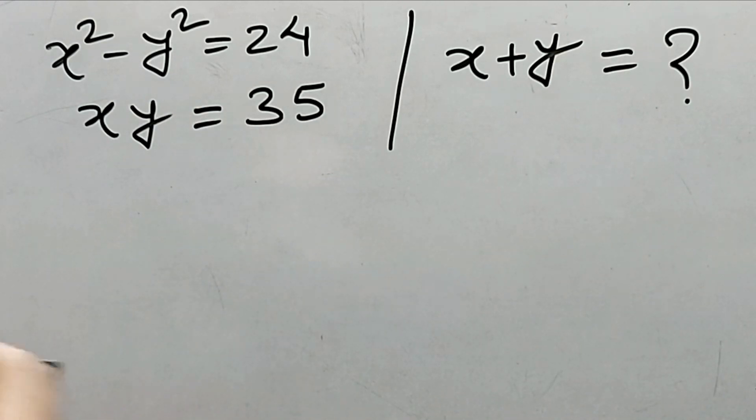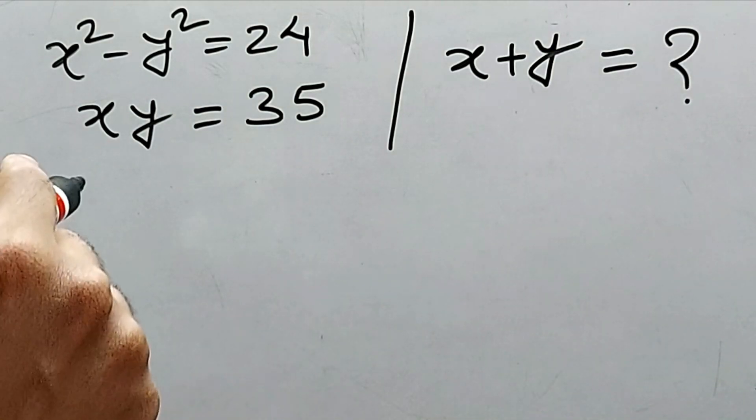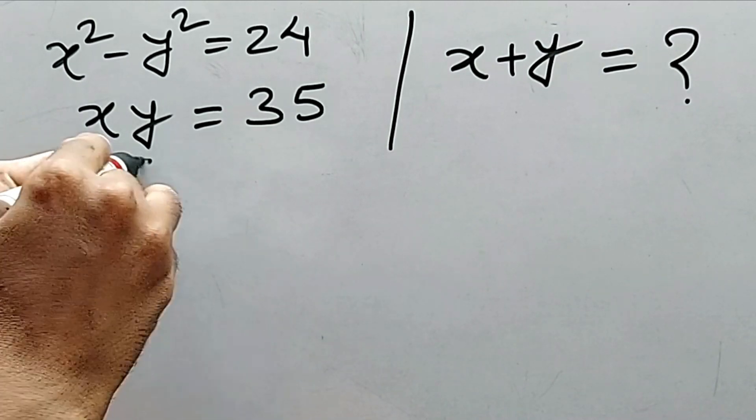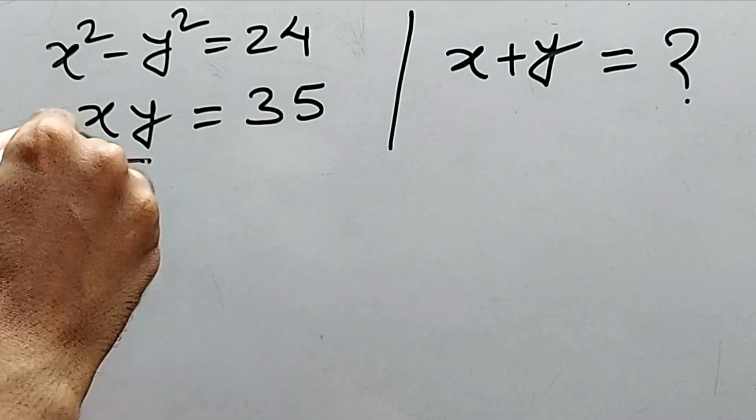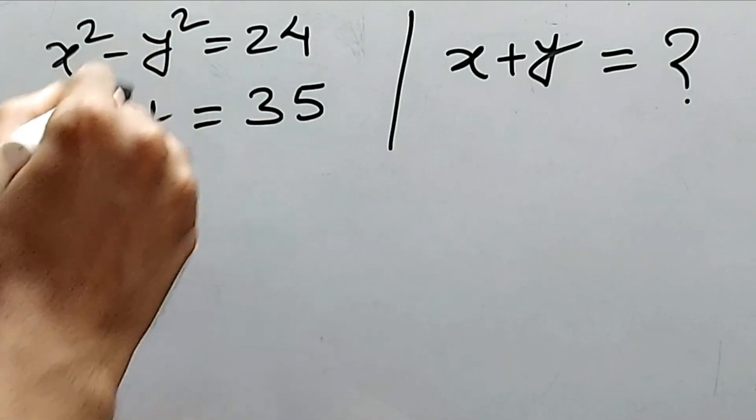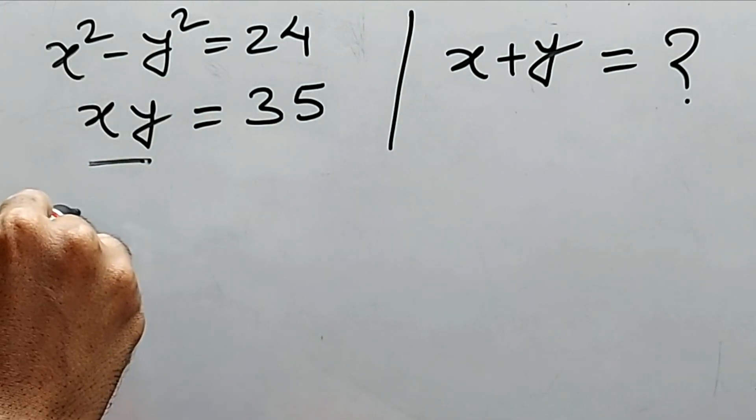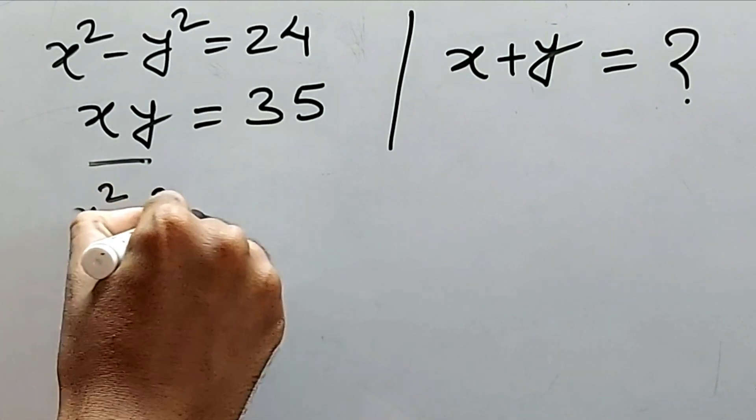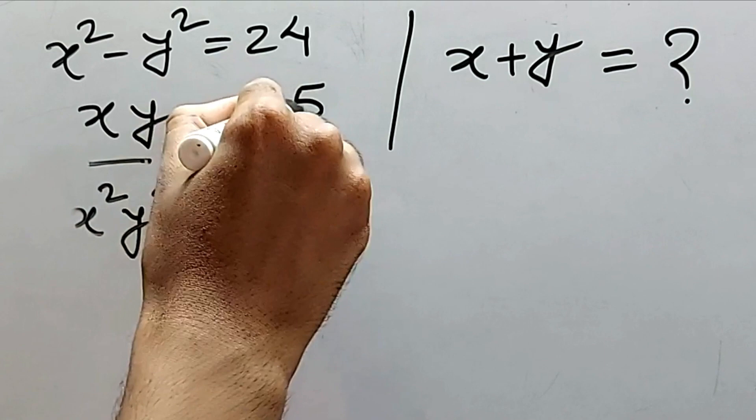There are so many ways, but I found the best way is to work with this one, the smallest part, that is xy. So if we just take a square of this, we get x squared y squared and this is equal to 35 squared.